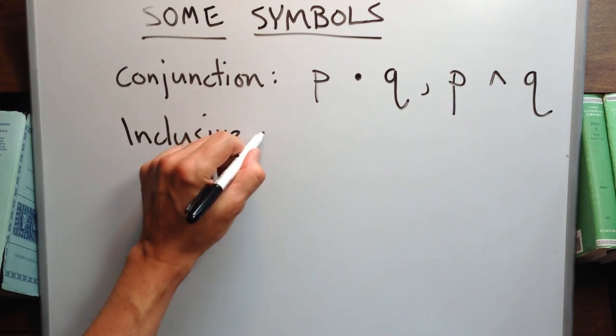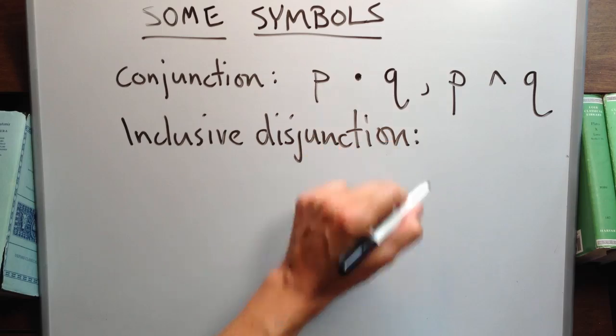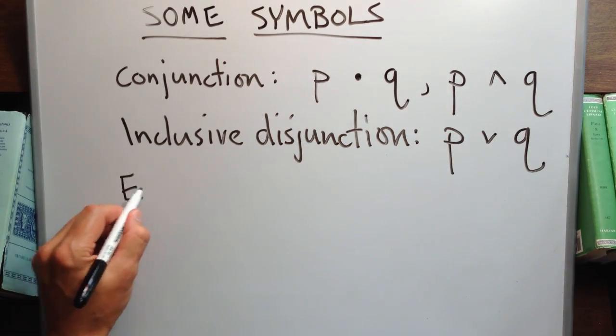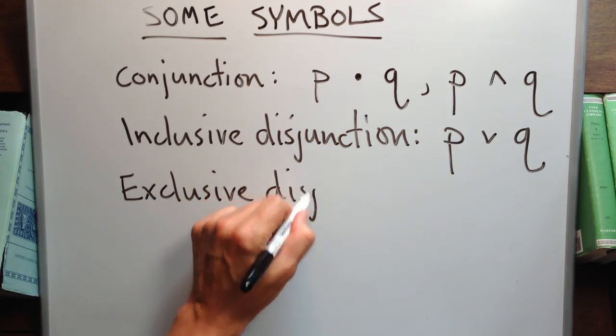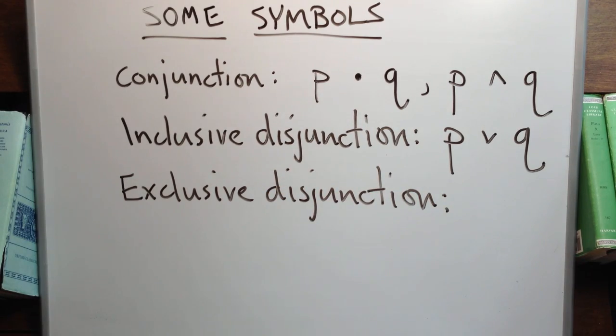For an inclusive disjunction, we use a V. For an exclusive disjunction, that is, an either-or disjunction, we use a V with a bar beneath it.